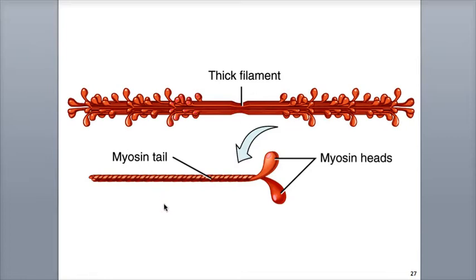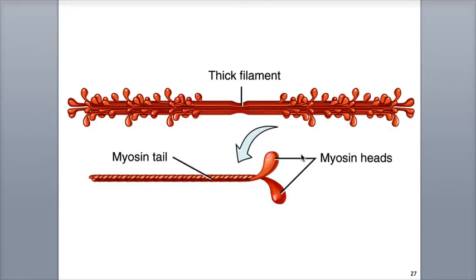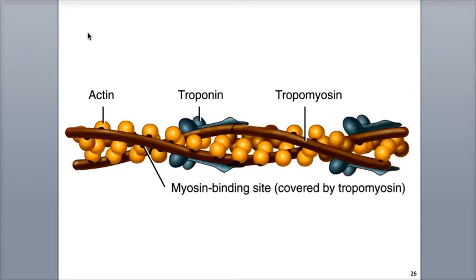Myosin has a unique shape. It resembles two golf clubs twisted together, with their tails — the golf club handles — oriented towards the M-line and forming the shafts of the thick filament. The two golf club heads are called the myosin heads, and they project away from the thick filament toward the surrounding thin filaments.